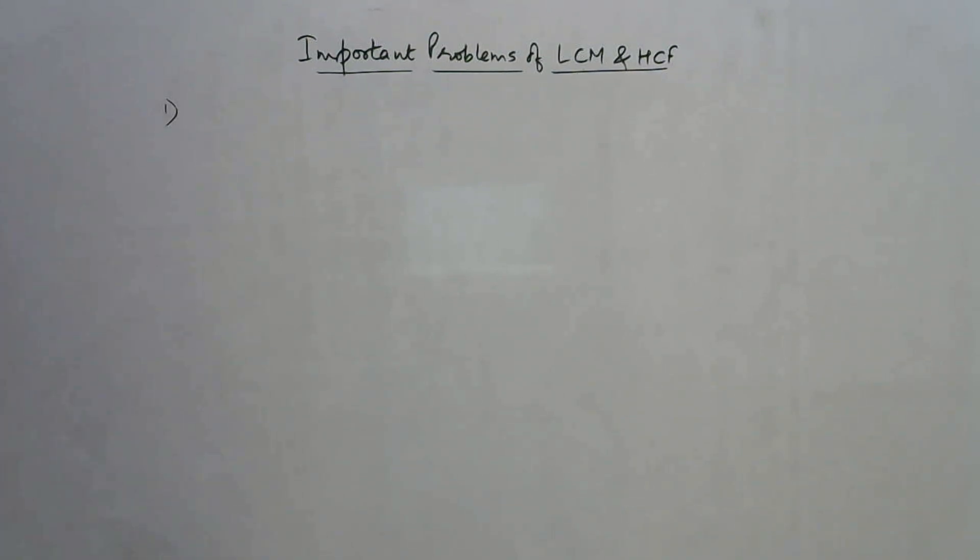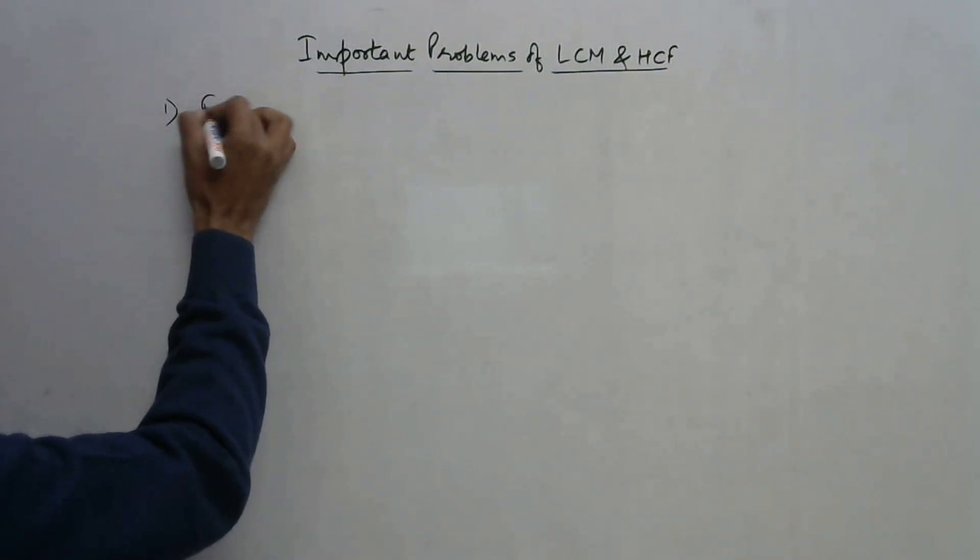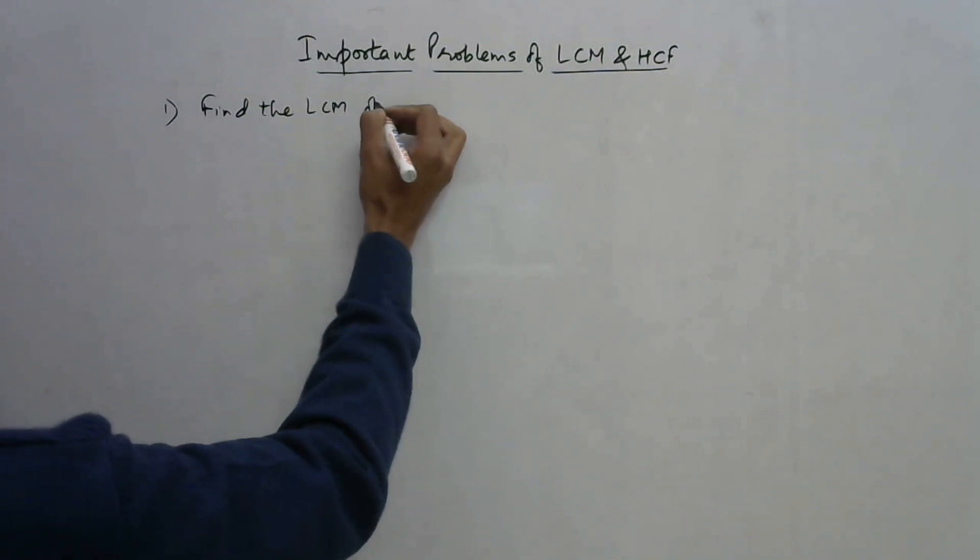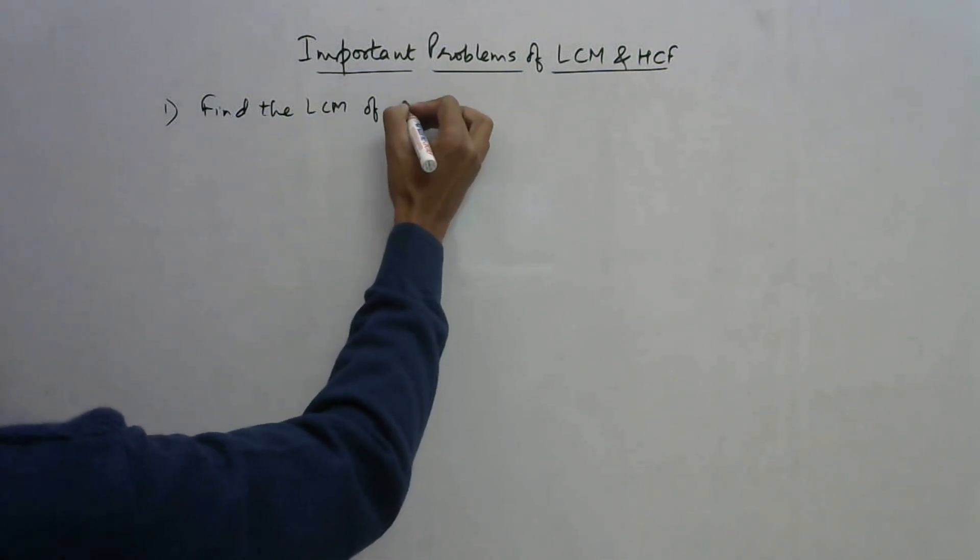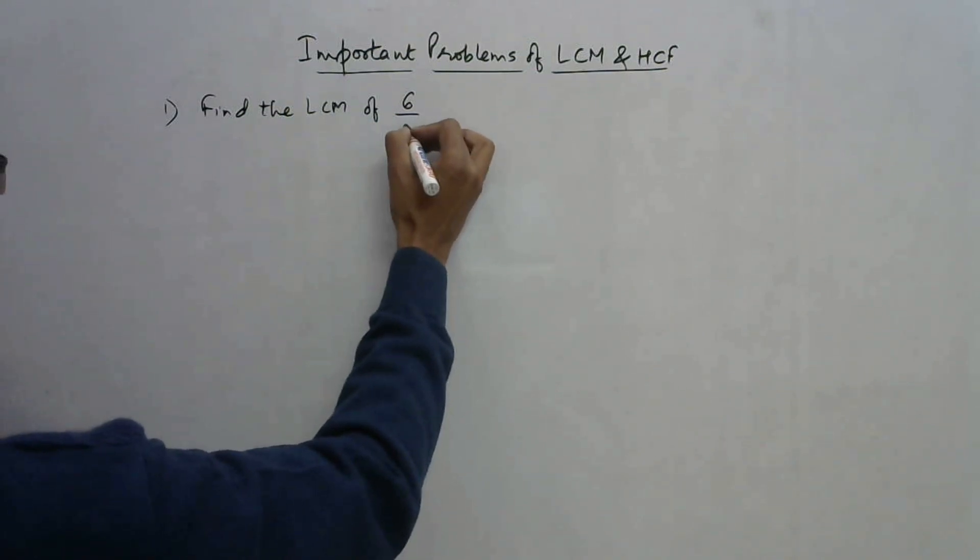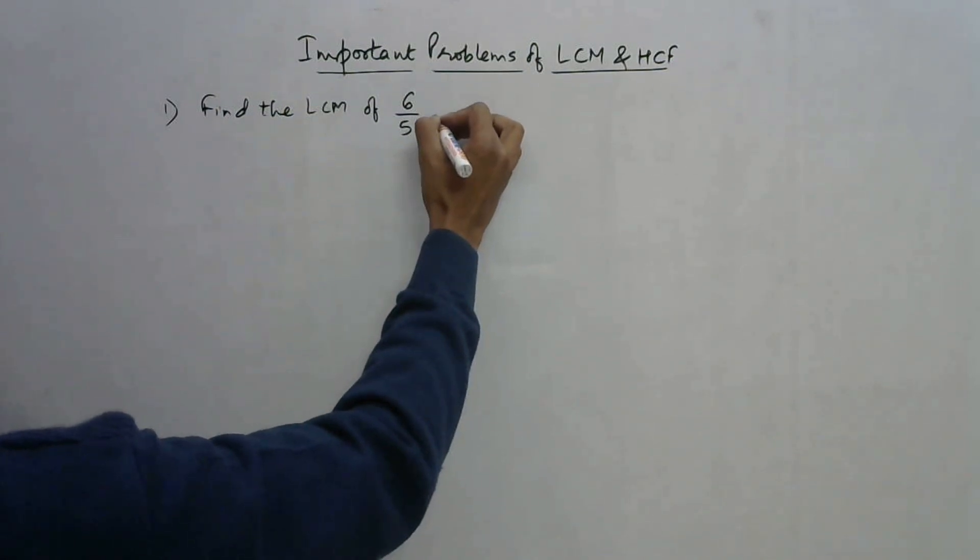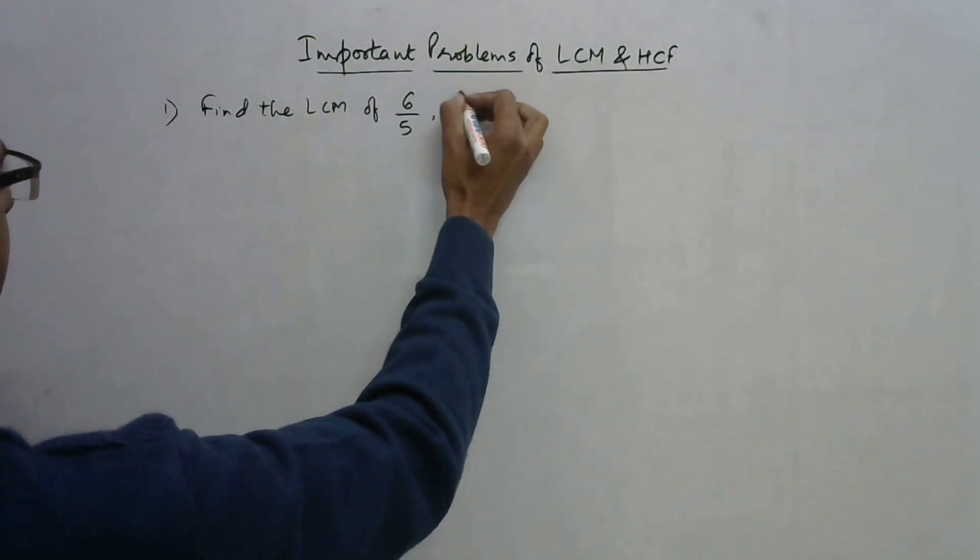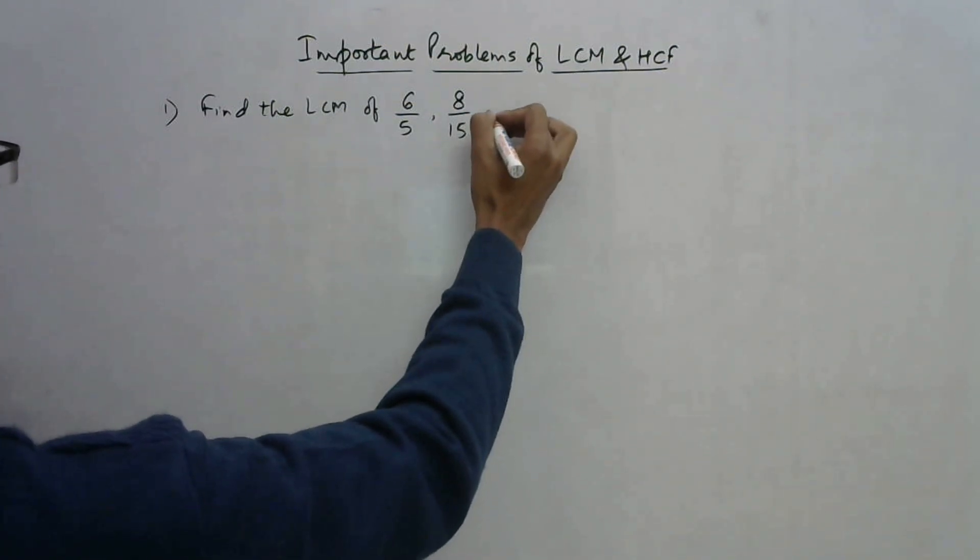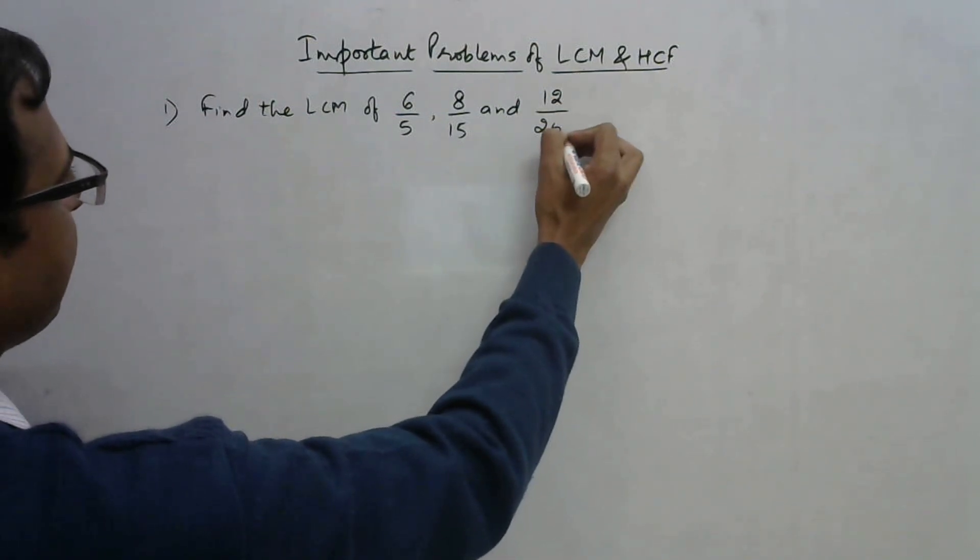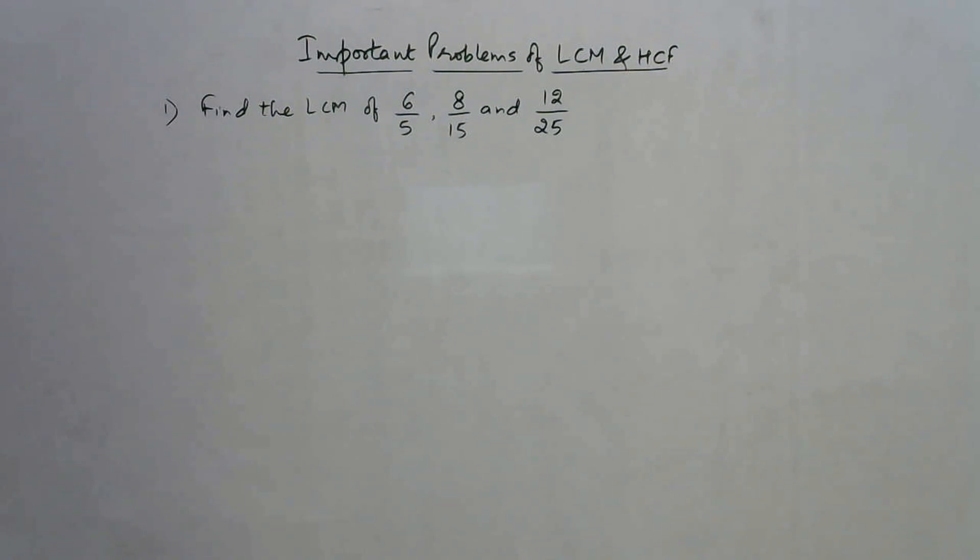In the first question we need to find the LCM of some given fractions. The fractions are 6 upon 5, then 8 upon 15, and the third one is 12 upon 25. We need to find the LCM of these three fractions.